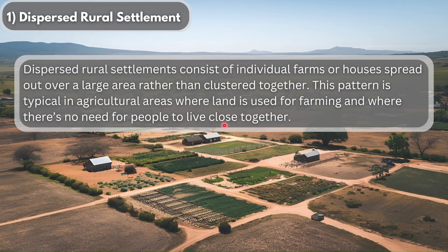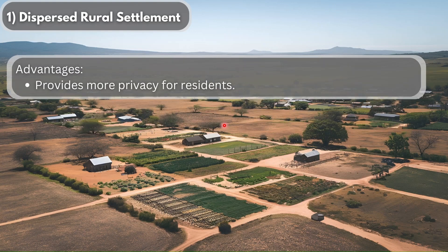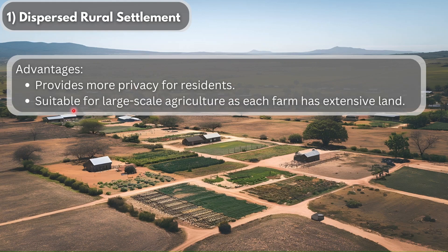The first advantage of dispersed rural settlements is that it provides more privacy for residents. Because you're living so far away from neighbors, you're going to have plenty of privacy. It's also suitable for large-scale agriculture as each farm has extensive land, so you can use these crops to sell and make money, and obviously use it to provide for your family.